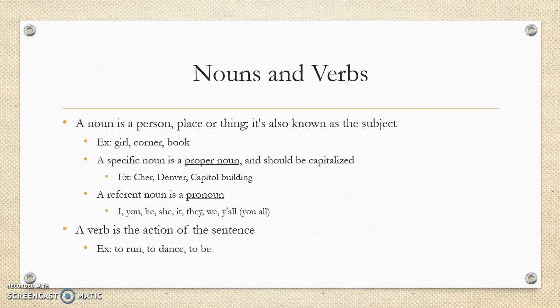There's also a pronoun, which refers back to your main noun — your girl, your corner, your book. You wouldn't refer to a girl as 'it' because that's rude; she's a 'she.' A corner is 'it' because it's neither male nor female. There's also 'I' referring to yourself, 'you' for someone else, 'he,' 'she,' 'it,' 'they' for a group of people, 'we' for a group including yourself, and 'y'all' — or 'all y'all' — as the plural 'you.'